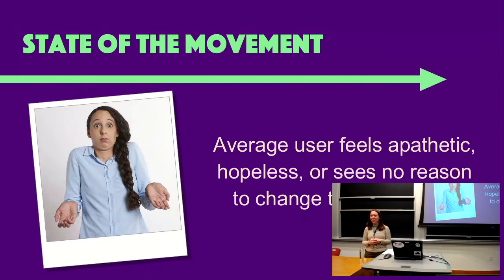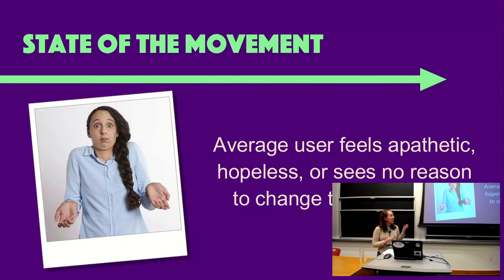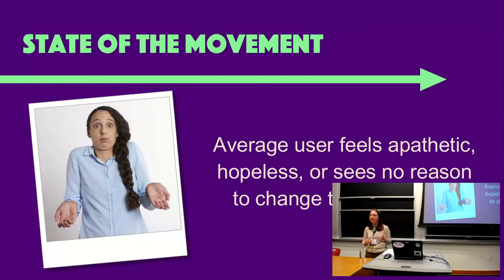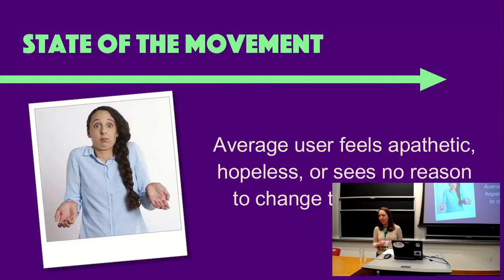Outside of the technical community, the state of the movement is essentially non-existent. Your average person on the street would have no clue what the free software movement is — if anything, they'd assume it was about gratis software. Those who do know there's a problem tend to feel pretty hopeless. In my day-to-day life, people will say 'yes, Facebook is evil, Google knows too much, but what can we do?' While it has never been easier to leave proprietary software in favor of free alternatives, it's also never been harder due to the social pressure to use proprietary systems. People don't feel encouraged, especially those who don't feel directly impacted by the four freedoms — if they've even heard of them.